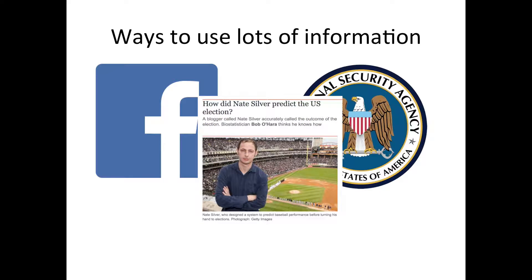Anybody here heard of Nate Silver? FiveThirtyEight is his website — it's an amazing website, please check it out. He basically figured out the 2012 election based on data. He didn't do any polls himself; he just took the average of all the polls that were out there — some left, some right. You can use this to actually predict major events, and the CIA is actually using data analysis for this — using normal people to figure out what, say, Russia is going to do. And it's working — that's the scary part.